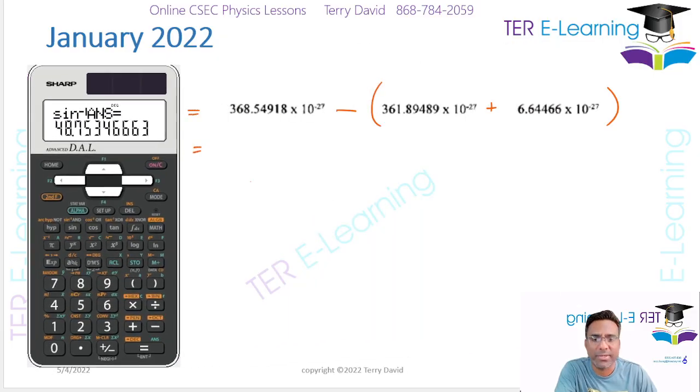Let's work on this mass defect. So what I'm gonna do is 368.54918 by 10 to the minus 27, so you're going to press EXP 27 minus. And now we're going to subtract, and I'm going to use an open bracket here because I want the calculator to add up those two figures for me there. So that is 361.89489 by 10 to the minus 27.